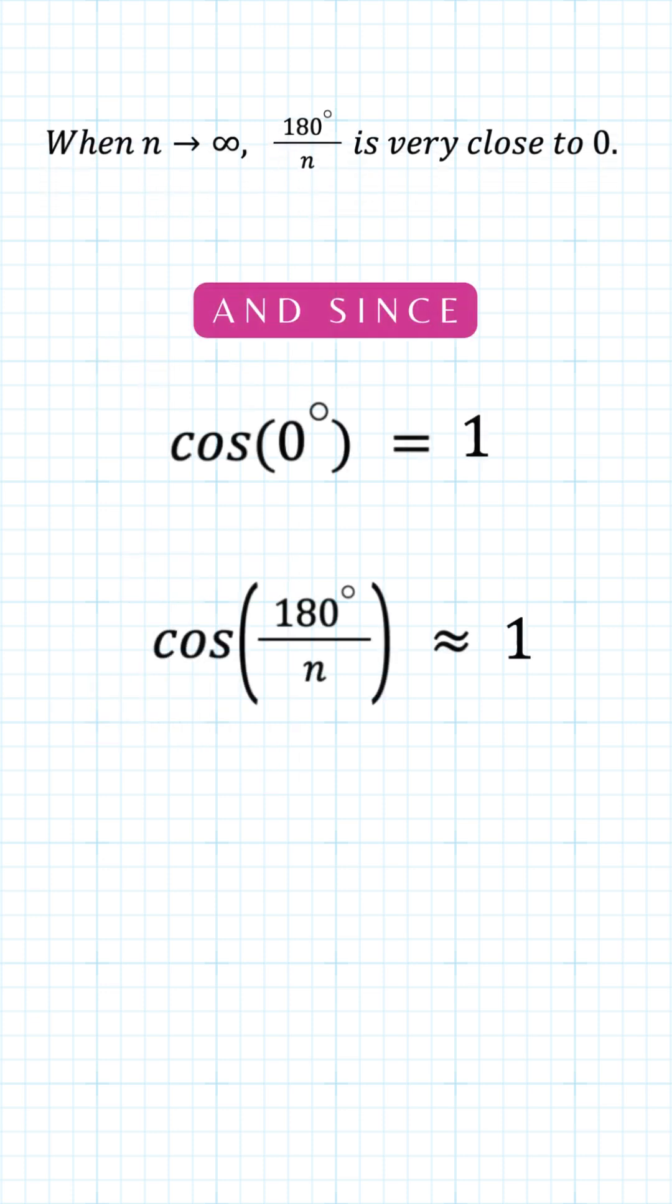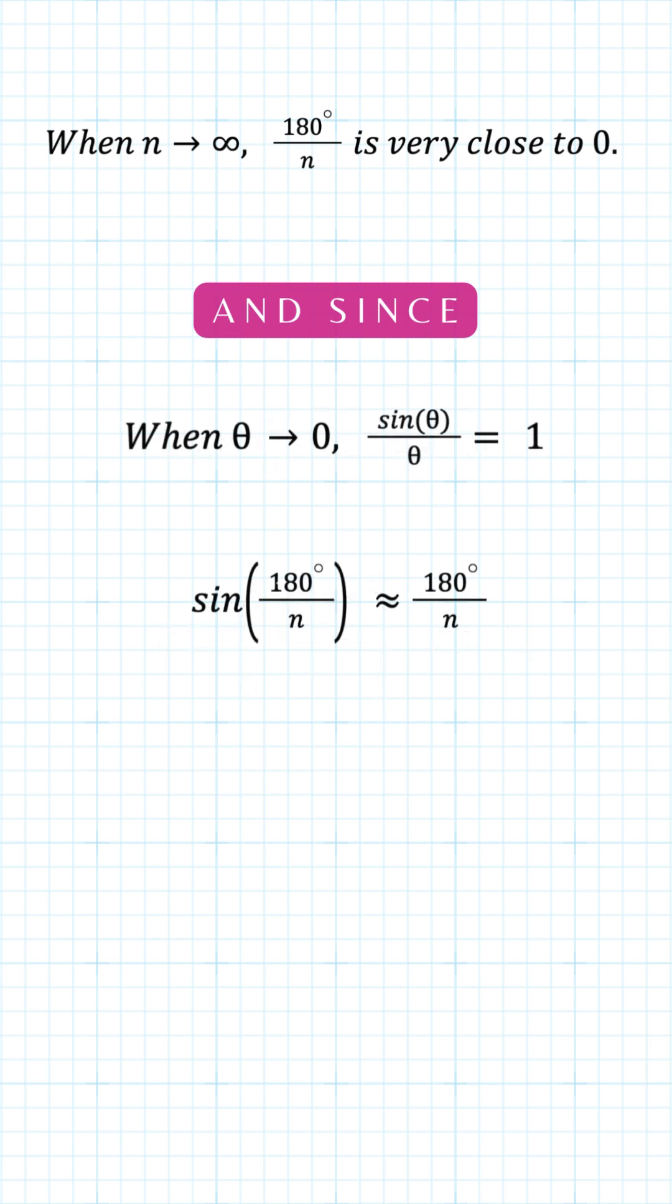So now we can say the cos term is equal to 1 and we can say the sin term is equal to 180 degrees over n.